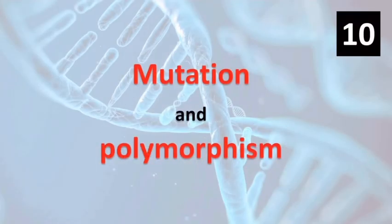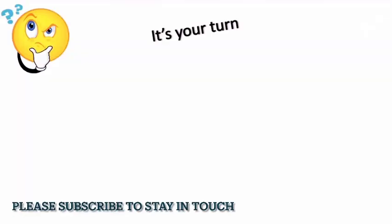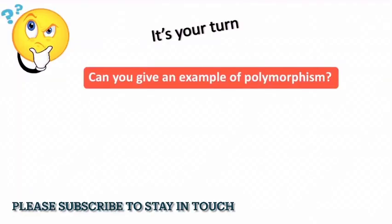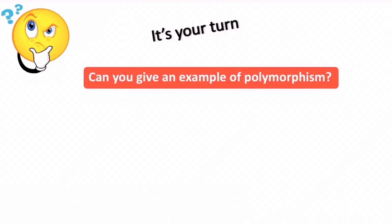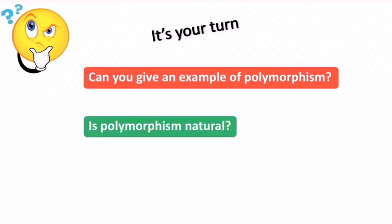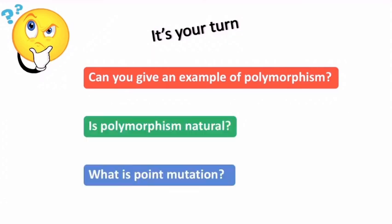Now, these are our last pair terms, mutation and polymorphism. It's your turn. Can you answer the following questions? Can you give an example of polymorphism? Is polymorphism natural? What is a point mutation? Please answer in the comment section.